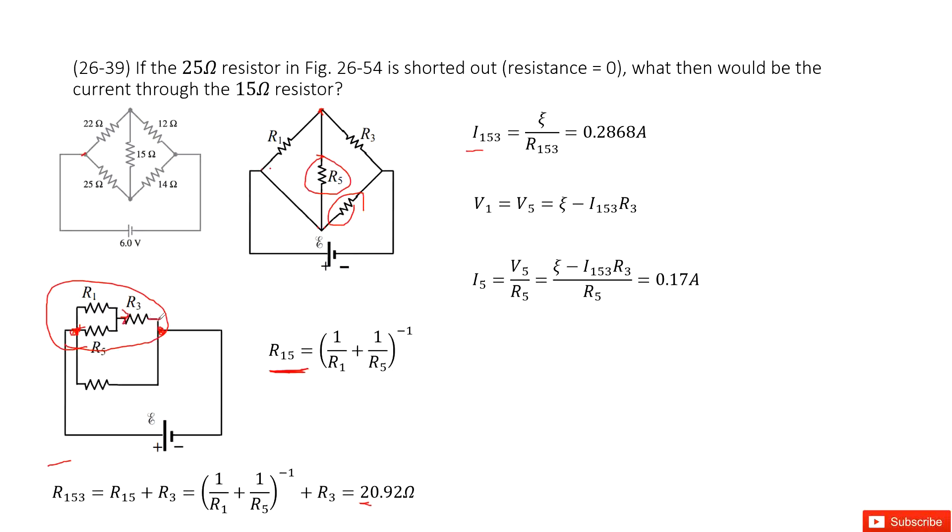So now this current goes through there. So now what are the voltages for V1 and V5? So V1 equals V5 equals epsilon minus the voltage decreased by resistor R3. So minus I153 times R3.